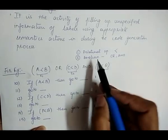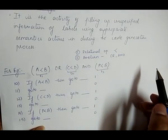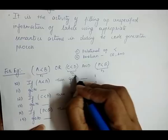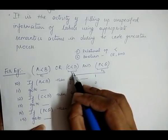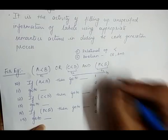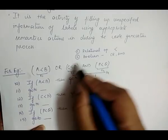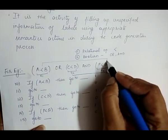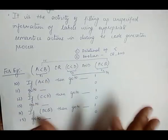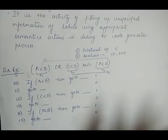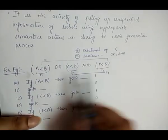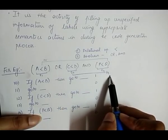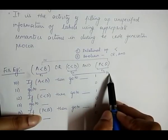We operate on each relational operator and store results in temporary variables: t1 for 'a < b', t2 for 'c < d', and t3 for 'p < q'. Then we handle boolean operators. Since AND has more priority than OR, we first compute t2 AND t3 and store the result in t4, then perform OR on t1 and t4, giving result t5.